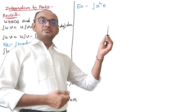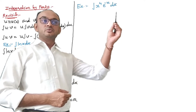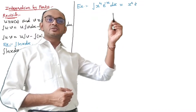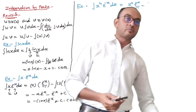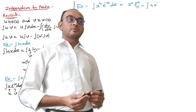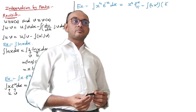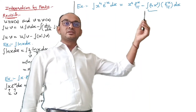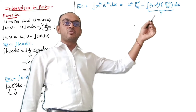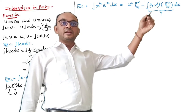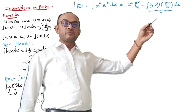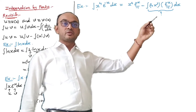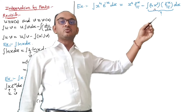Now suppose we have the integral of x^4·e^(−x) dx. We set x^4 as u and e^(−x) as v. The first application gives x^4 times the integral of e^(−x), which is e^(−x)/(−1), minus the remaining integral. The question is: how do we integrate this remaining quantity? We apply the rule of integration by parts again.